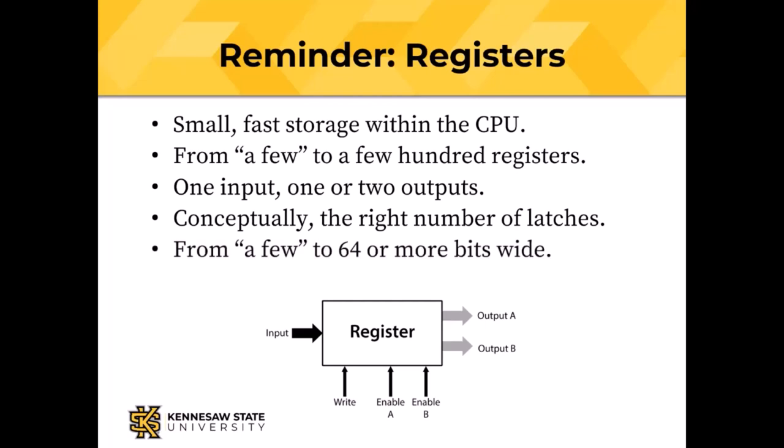The capacity of a register is from a few bits to 64 or even 128 bits. The registers in the computer we're going to design are mostly 12-bit registers. Fat arrows indicate multi-bit paths, and if we need to know how many bits in a multi-bit path we'll put a slash across the fat arrow and write a number.